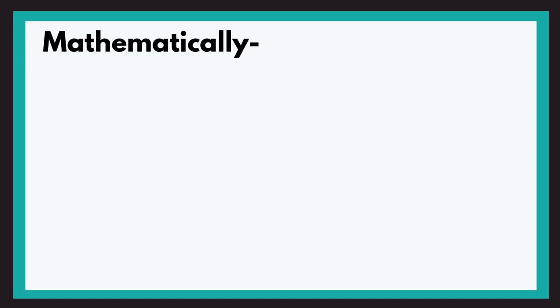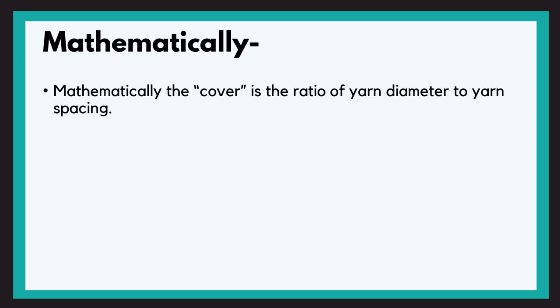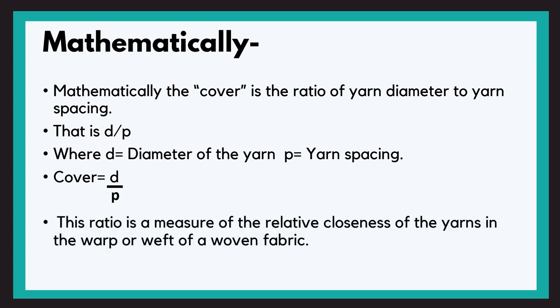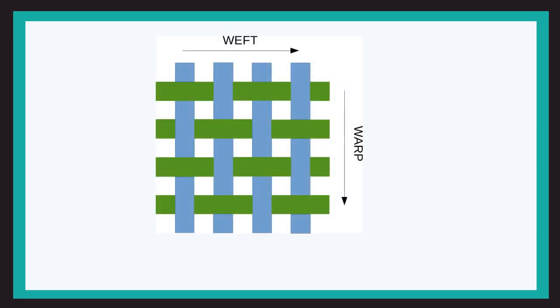So let us go mathematically to get it more clear and understand the formula. Mathematically, cover is the ratio of yarn diameter to the yarn spacing, i.e. D upon P, where D is the diameter of the yarn and P is the yarn spacing. This ratio is the measure of relative closeness of the yarns in the warp or weft of a woven fabric. These are the weft, these are the warps, the cover will be equal to D upon P.